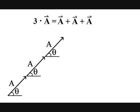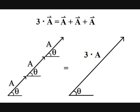The resultant vector is simply the one vector that draws from the tail of the first A to the head of the last. As you can see, the resultant vector has the same direction as A, and a length 3 times that as A.